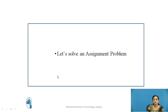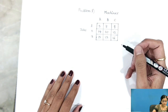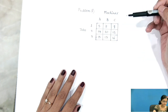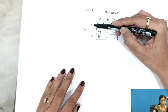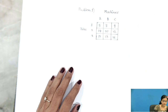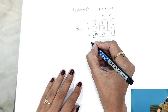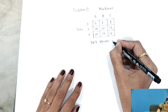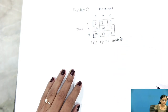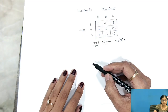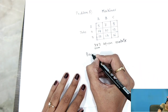Now let us solve an assignment problem to understand the concept more clearly. The machines are denoted by A, B, and C, and the jobs are Job 1, 2, and 3. The cost matrix for this problem is a 3×3 square matrix. Since the number of rows equals the number of columns, this is a balanced assignment problem.